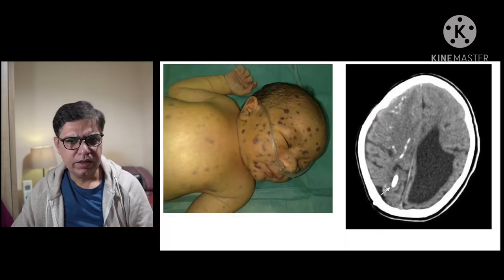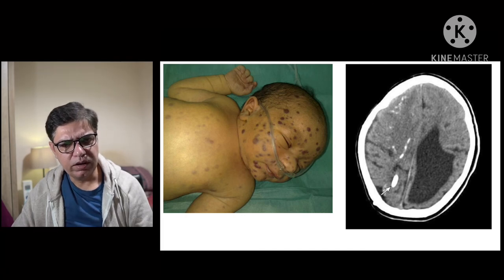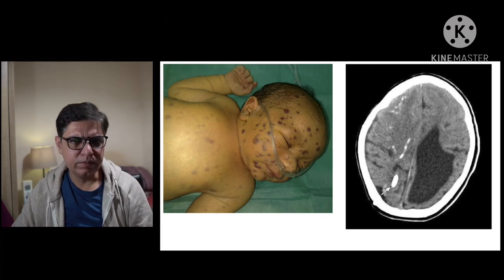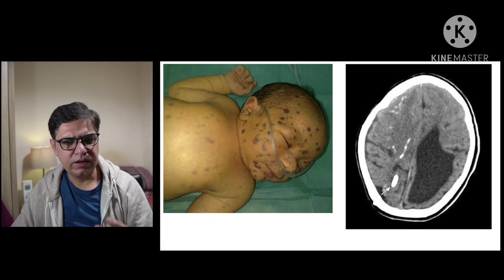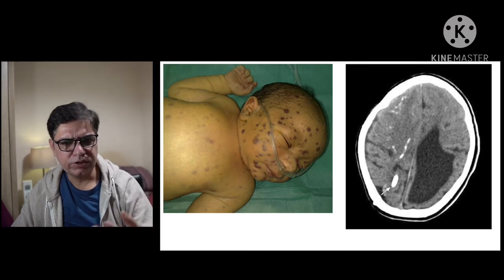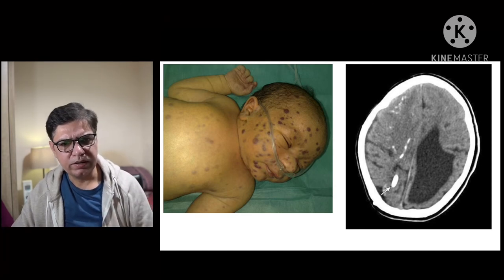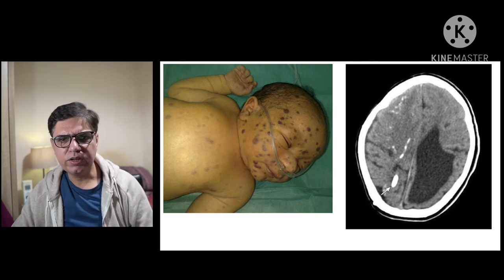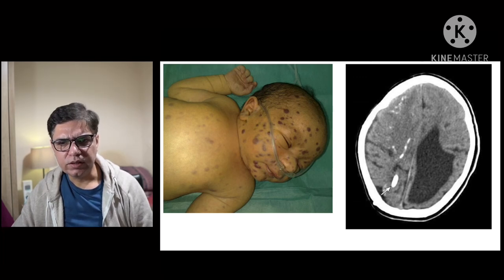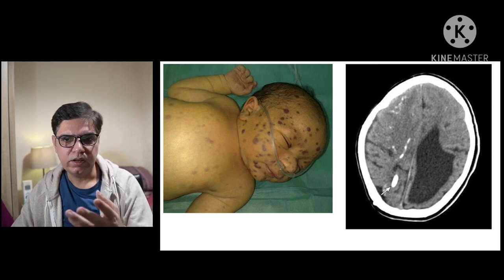Here is a baby on the left side with a blueberry muffin rash on the face and abdomen — this can occur in congenital rubella syndrome or congenital CMV infection. On the right side, a CT scan shows subcortical calcification with hydrocephalus, which, as mentioned, is very typical of Zika virus infection.